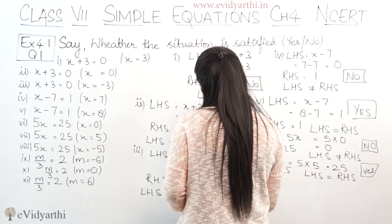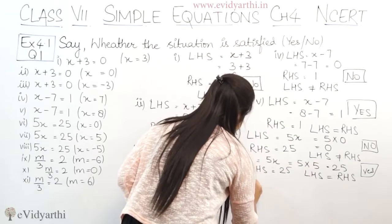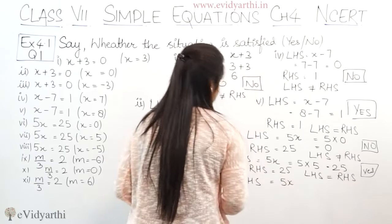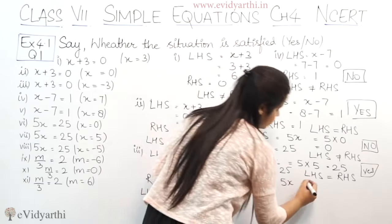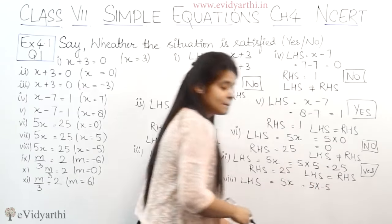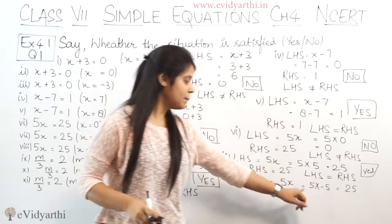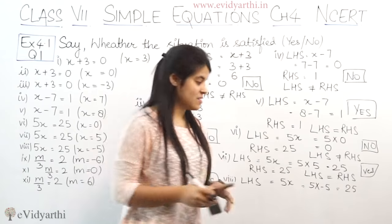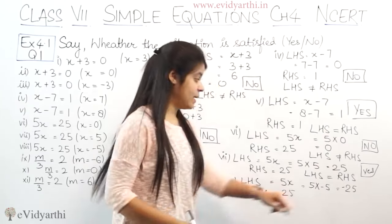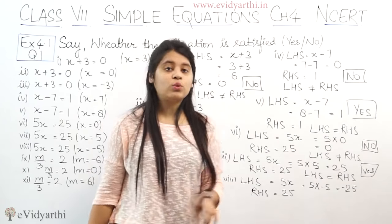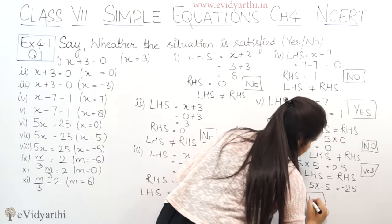In the 8th part we again have 5x equals to 25. Left hand side is 5x. Now x value to put is minus 5. So 5 multiply by minus 5: 5 into 5 is 25, but with the minus sign it becomes minus 25. RHS is 25, not minus 25. LHS is not equal to RHS, so the answer is no.